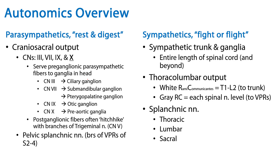We've discussed the parasympathetic division of the autonomic nervous system — its cranial nerve outflow as well as sacral pelvic splanchnic nerve outflow — as well as the sympathetic division of the autonomic nervous system. This is your summary slide. Thank you for your time.